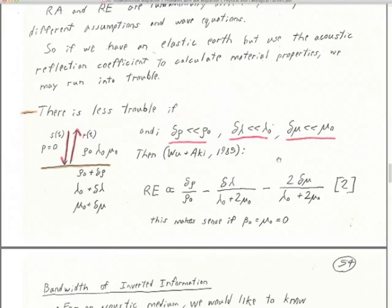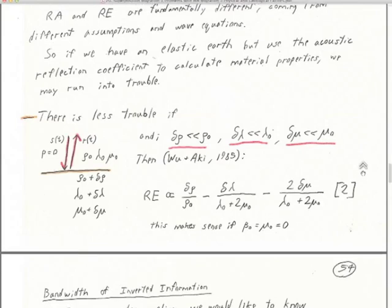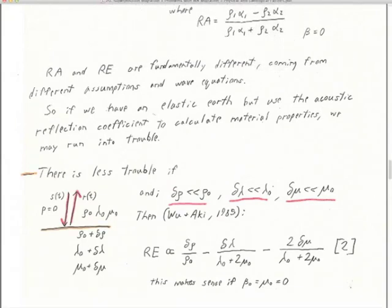One common question is: how much less? Because our amplitude data are not very accurate. This has worked where delta lambda is 50% of lambda0, which seems wildly crazy, but it sort of works. Formally your deltas ought to be like 1%, maybe 5% at the outside. But I've seen it work very often when the deltas are 20% of the backgrounds, and even at 50% you can still get something out of it. That's one reason why using this acoustic reflection coefficient works in all the popular software packages.